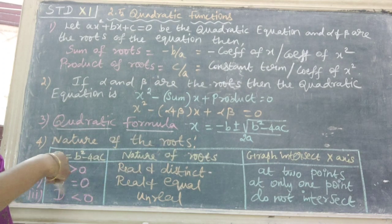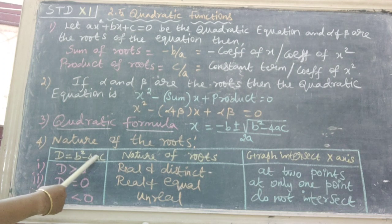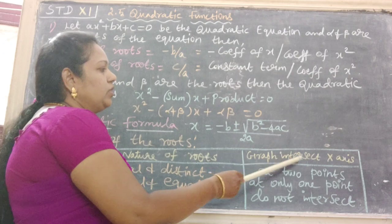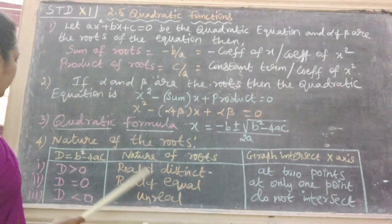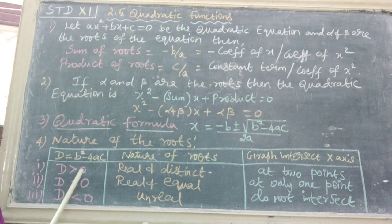There is one table. First column: D = b² - 4ac. Second: nature of roots. Third: graph intersect x-axis. First type: D > 0, strictly greater than 0.